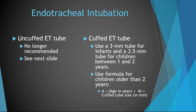The use of an uncuffed ET tube is no longer recommended by the American Heart Association. The cuffed ET tube uses a 3mm tube for infants and a 3.5mm tube for children between 1 and 2 years of age. For children older than 2 years, the formula is: 4 plus the age in years divided by 4 equals your cuffed tube size. Always have a tube one size smaller and one size larger than expected available for variability in upper airway diameter.